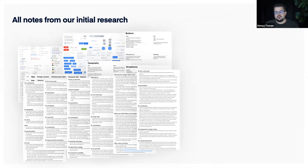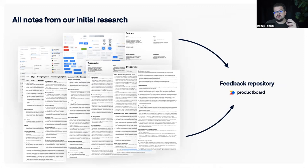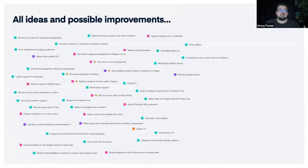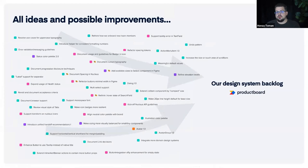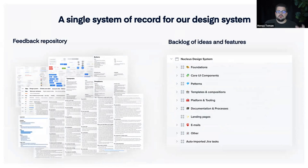Then I took all the feedback from initial research and saved it into our feedback repository, which happens to be Productboard. We also collected and analyzed existing content from our product and moved all the ideas and possible improvements to our design system backlog. The huge benefit: with feedback stored in Productboard and the backlog of ideas in the same place, we had a single system of record for our design system.